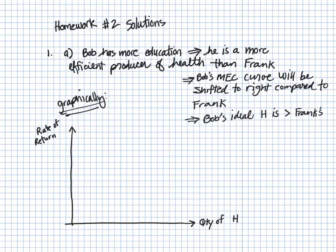So let's go ahead and draw these two MEC curves. Remember, the MEC curve is downward sloping, which implies that as we produce more and more H, as the quantity of H is larger, the rate of return to investing in subsequent units of H is diminishing. So let's code the first downward sloping curve MECF for Frank. Let's draw another one off to the right here. Let's call this MECB for Bob.